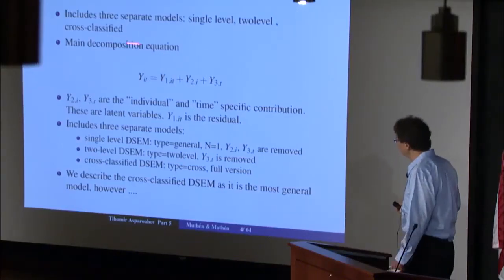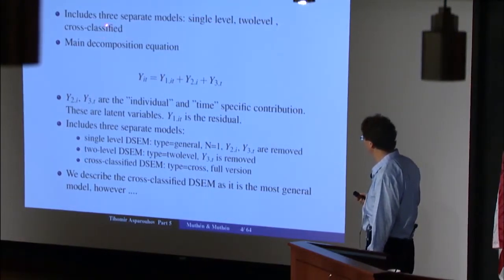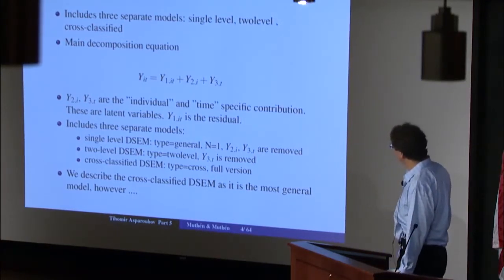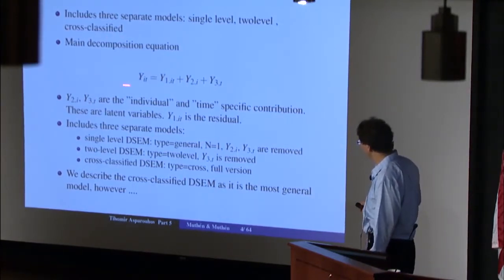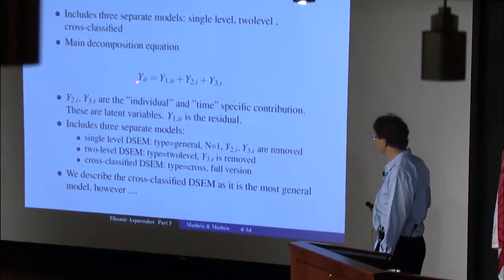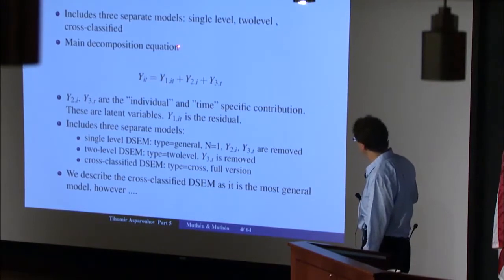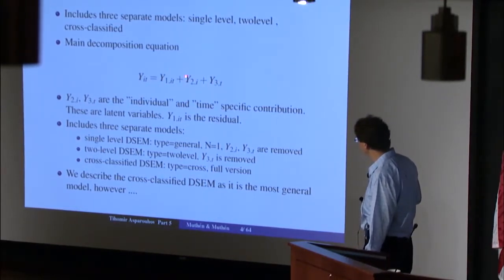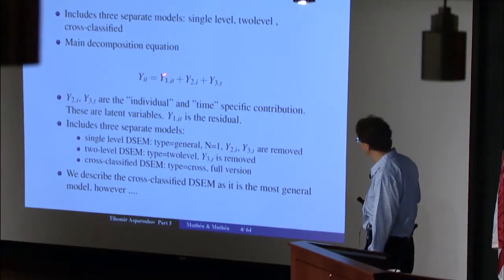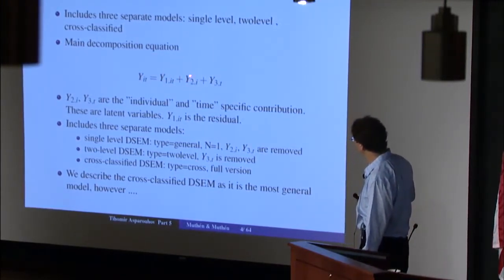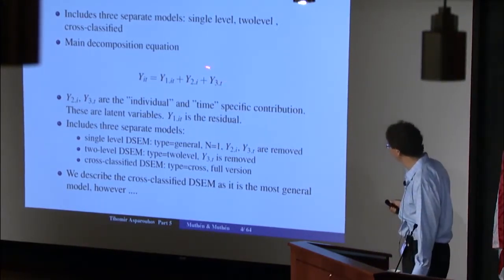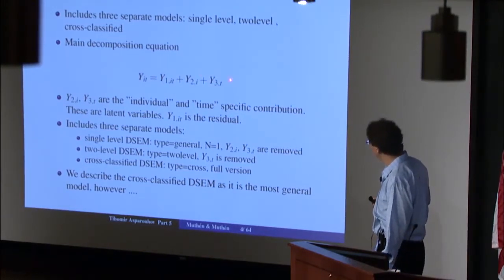The descent model consists of three separate models: the single-level model, the two-level model, and the cross-classified model. In N-Plus, you specify 'two level' to get the two-level, and 'type equals cross' for the cross-classified. The model starts with a fundamental decomposition equation that splits a dependent variable into three components: the individual-specific contribution, the time-specific contribution, and the residual — corresponding to the within-level, between-cluster, and between-time components.